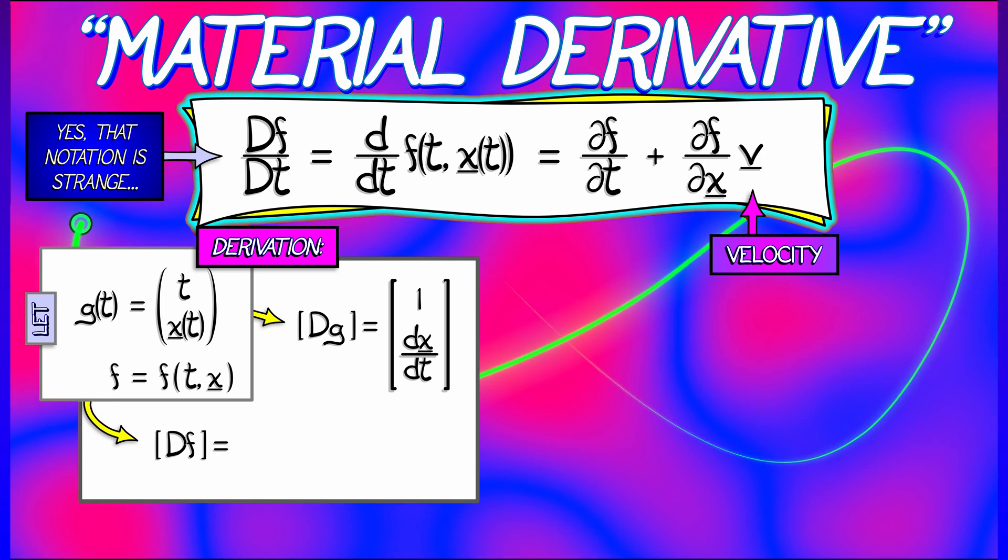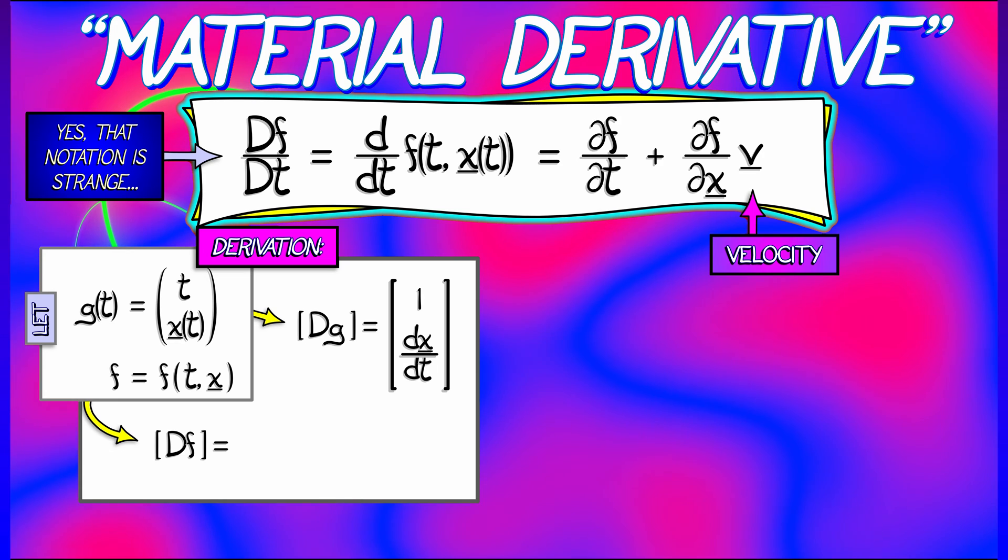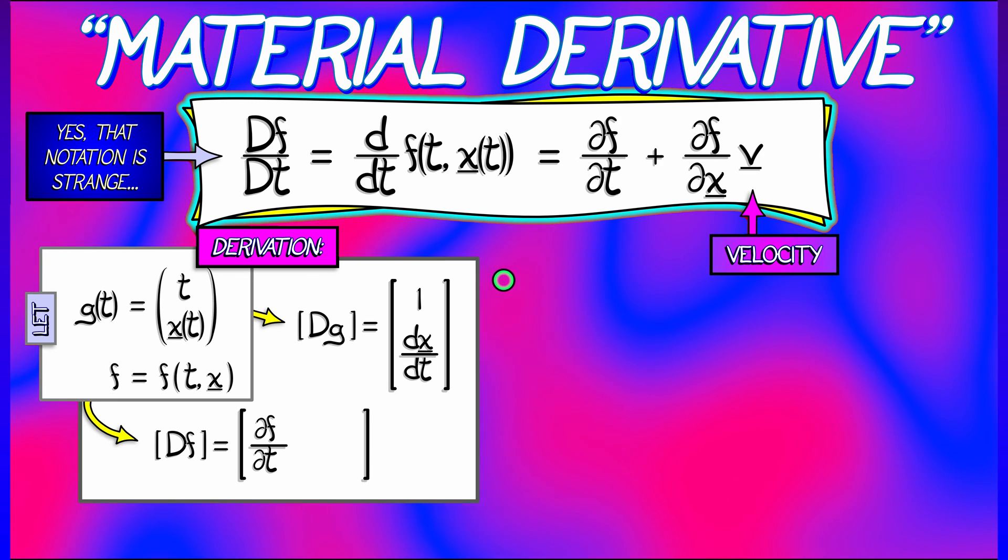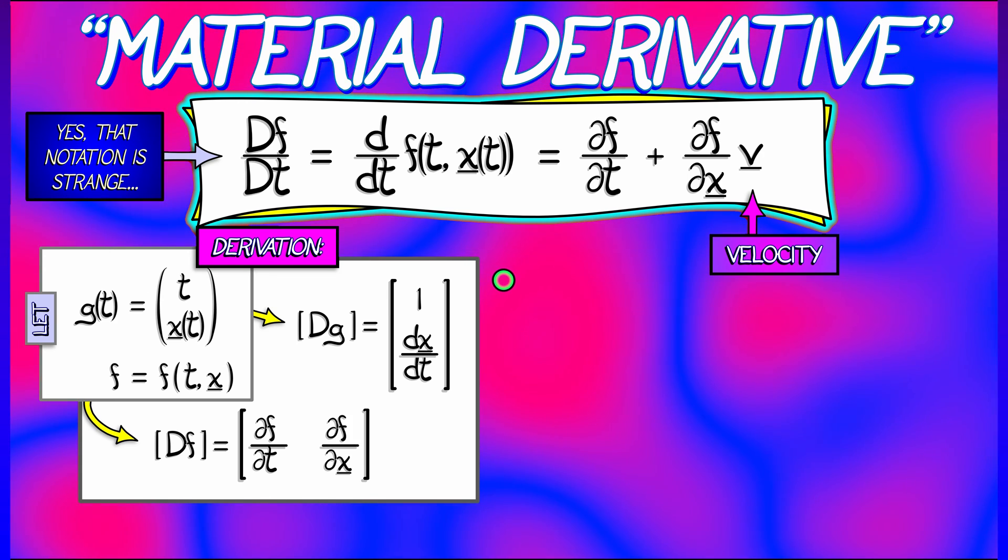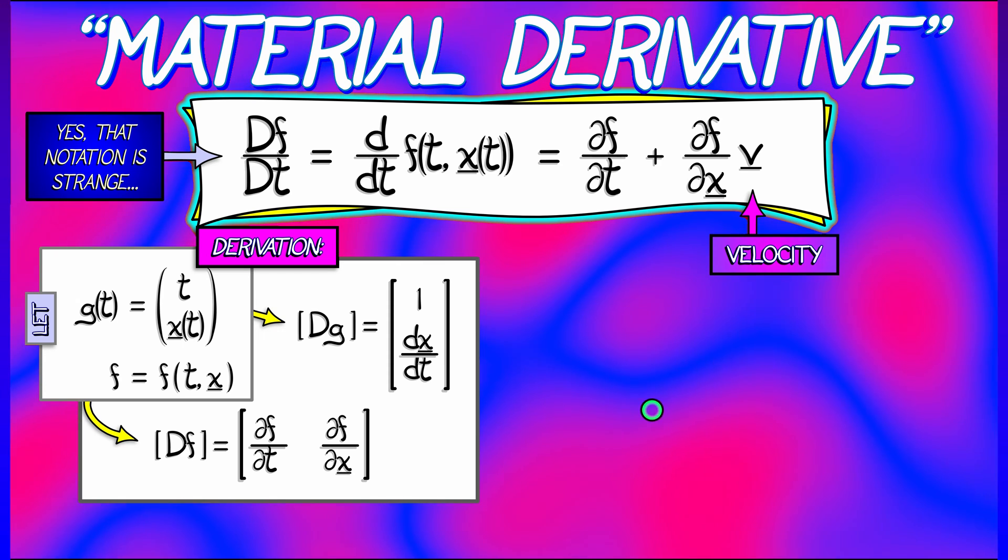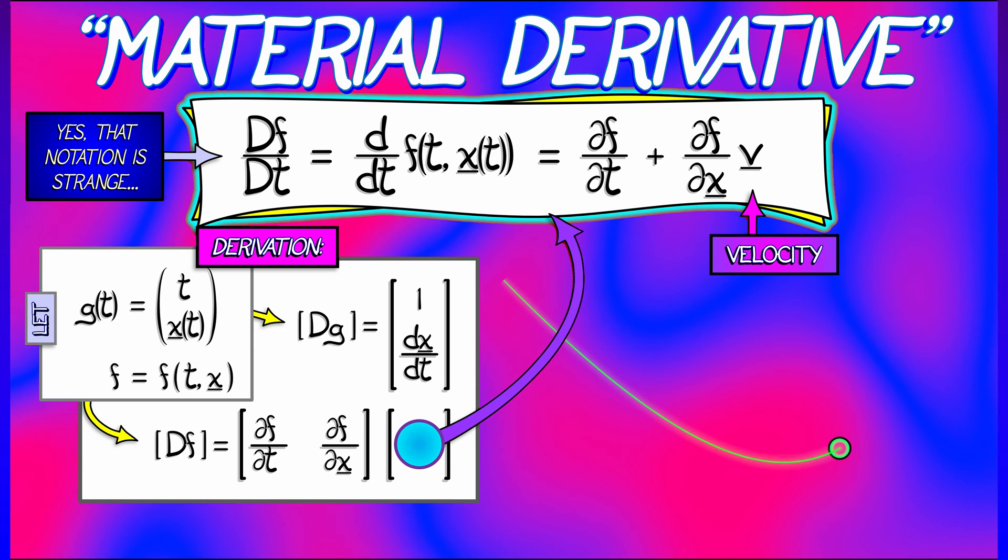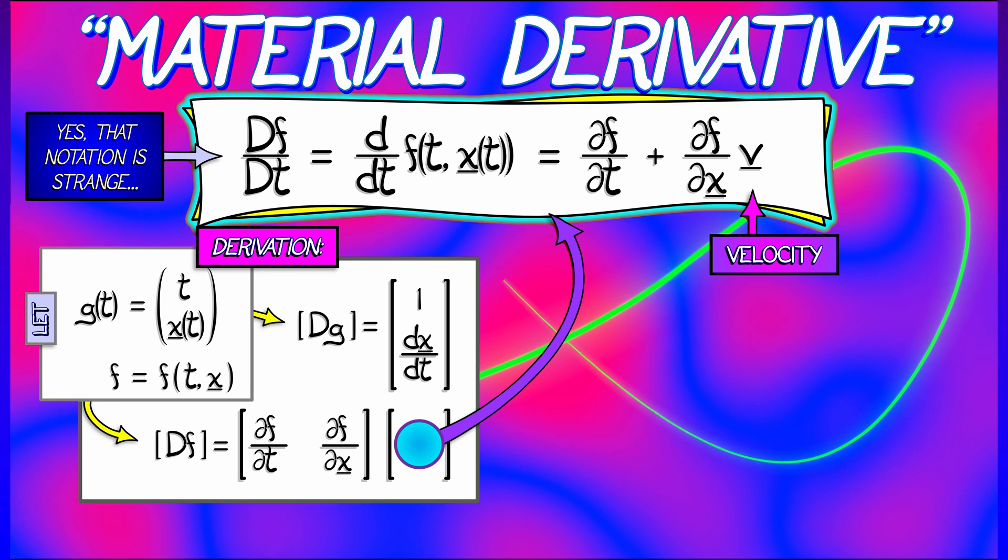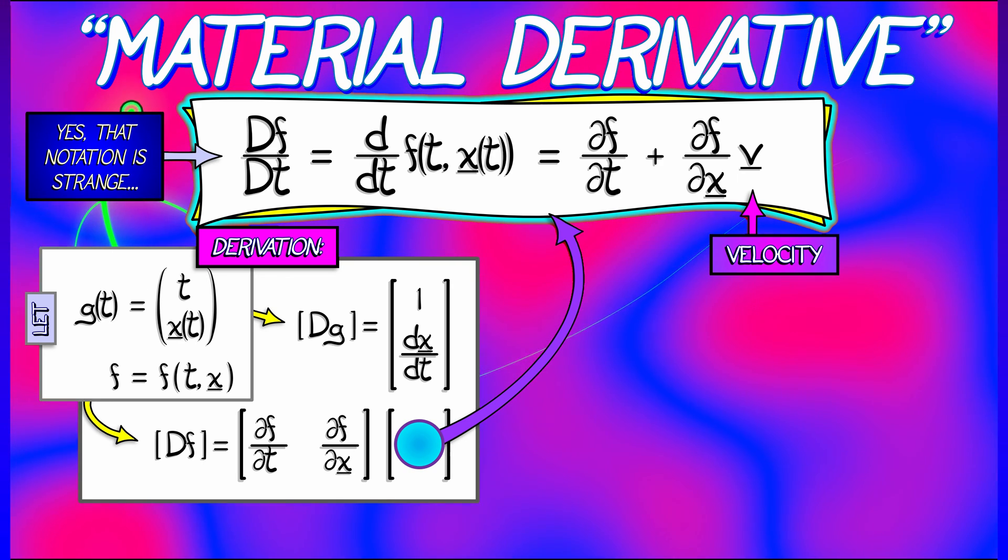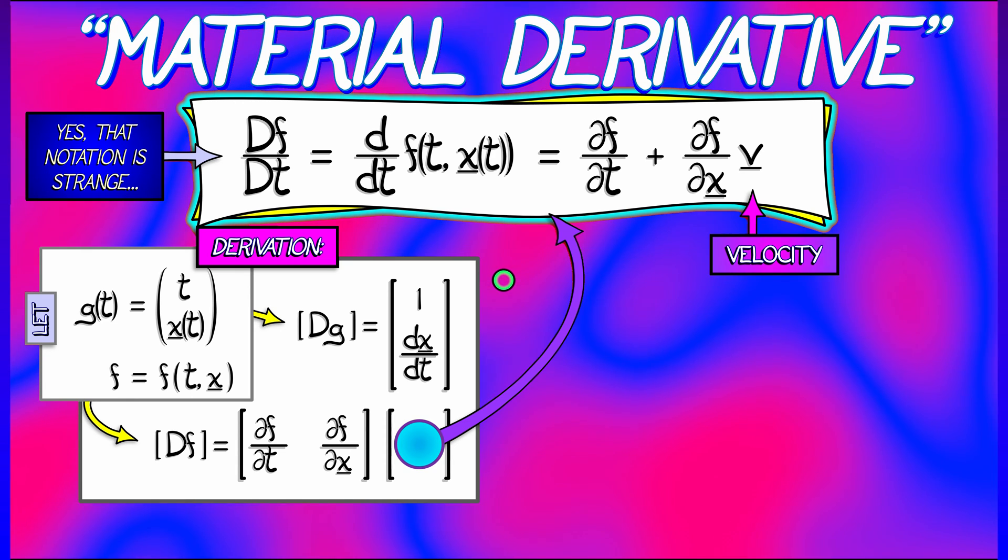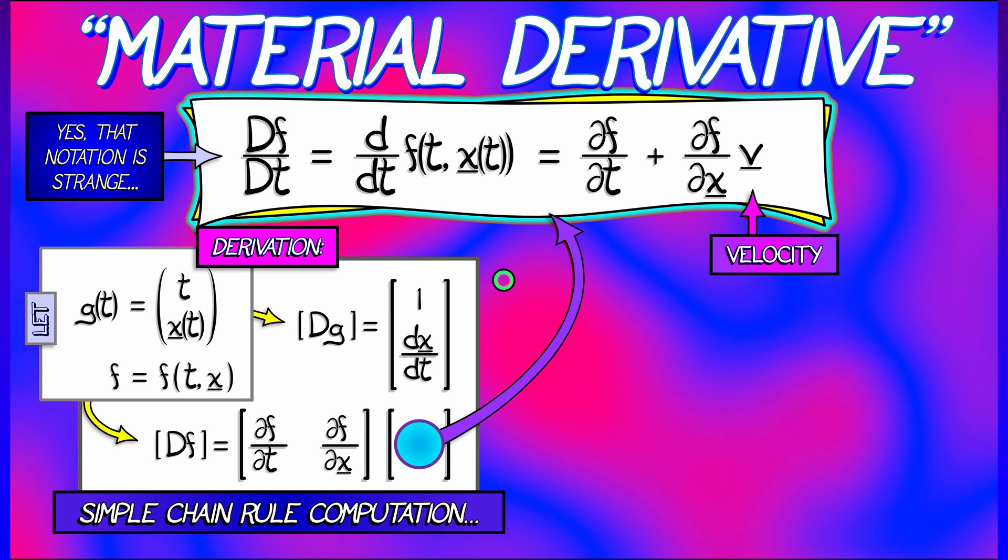Df, of course, depends on both the t and the x variables. And what I get is ∂f/∂t for the first entry, and then for all the remaining entries, the partial derivatives with respect to the space variables, which I'll compress into ∂f/∂x. Now look at what happens when you apply the chain rule. Multiply those two matrices together, and what do you get? ∂f/∂t plus ∂f/∂x times dx/dt. This is just a simple chain rule computation.